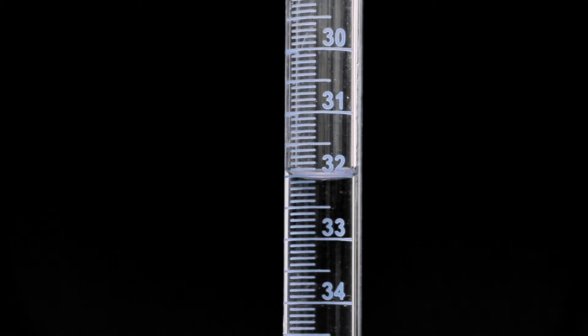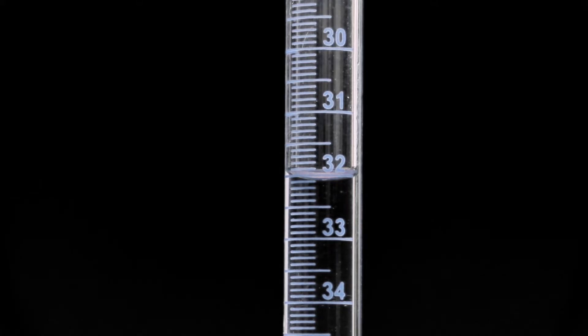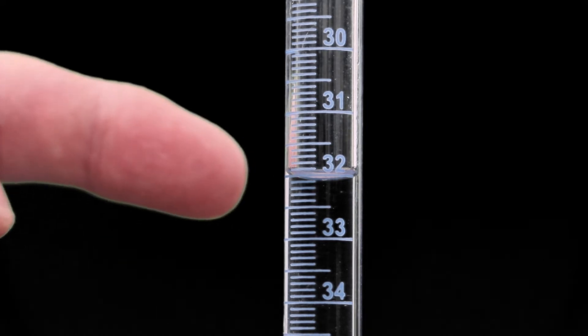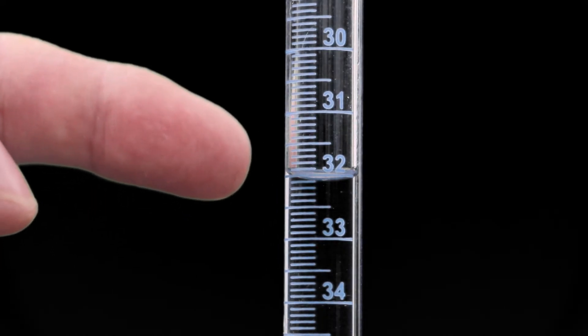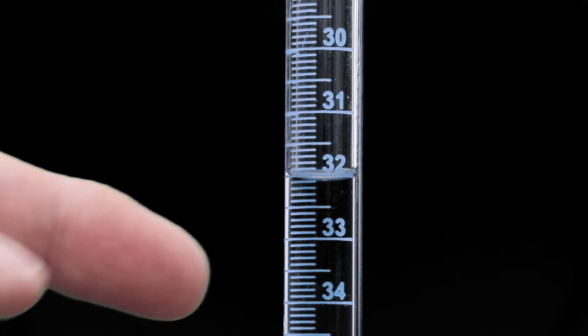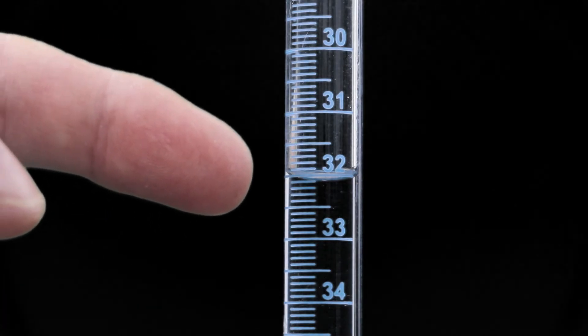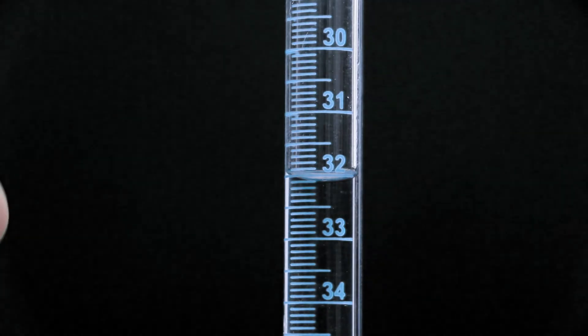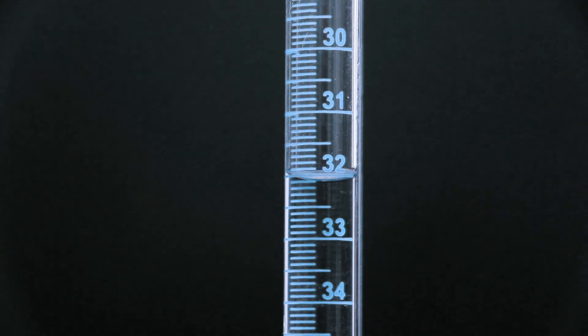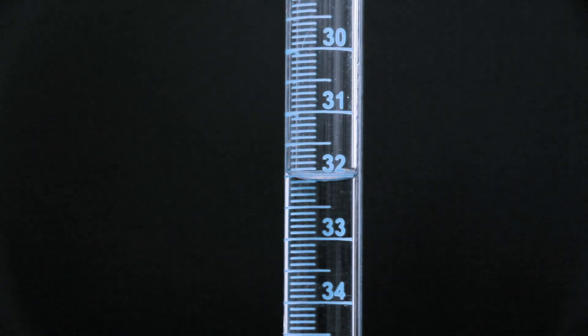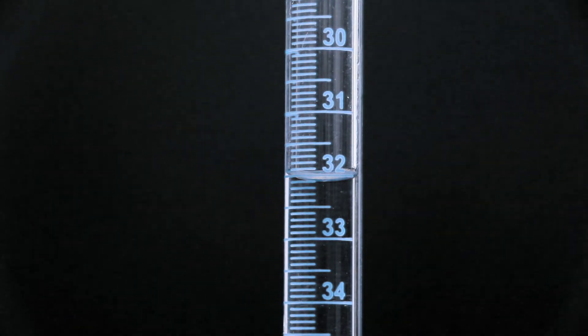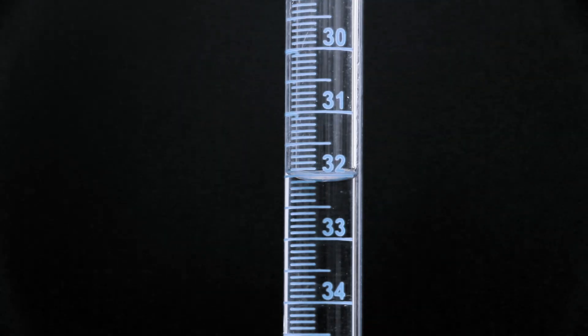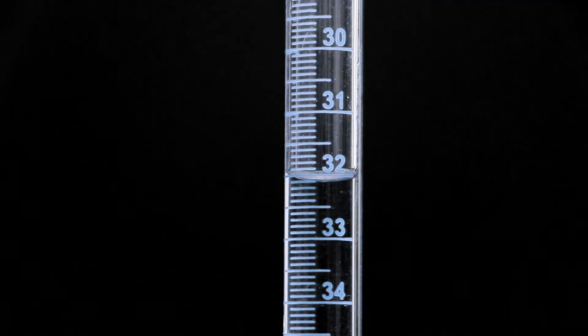Now that we've filled up the burette we need to take a reading. We look very carefully at the burette and we can see an upper meniscus and a lower meniscus, or perhaps some people take an average. Probably easiest just to measure the bottom of the meniscus. The bottom of the meniscus here is pointing to 32, so we'll take that as our first reading and then we'll do the titration.